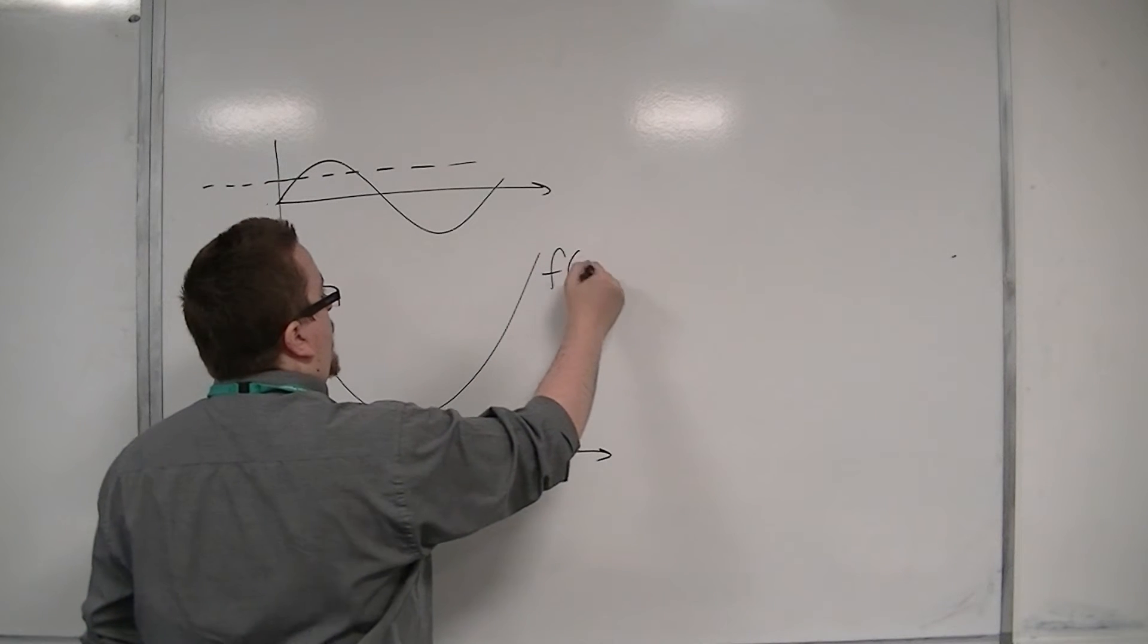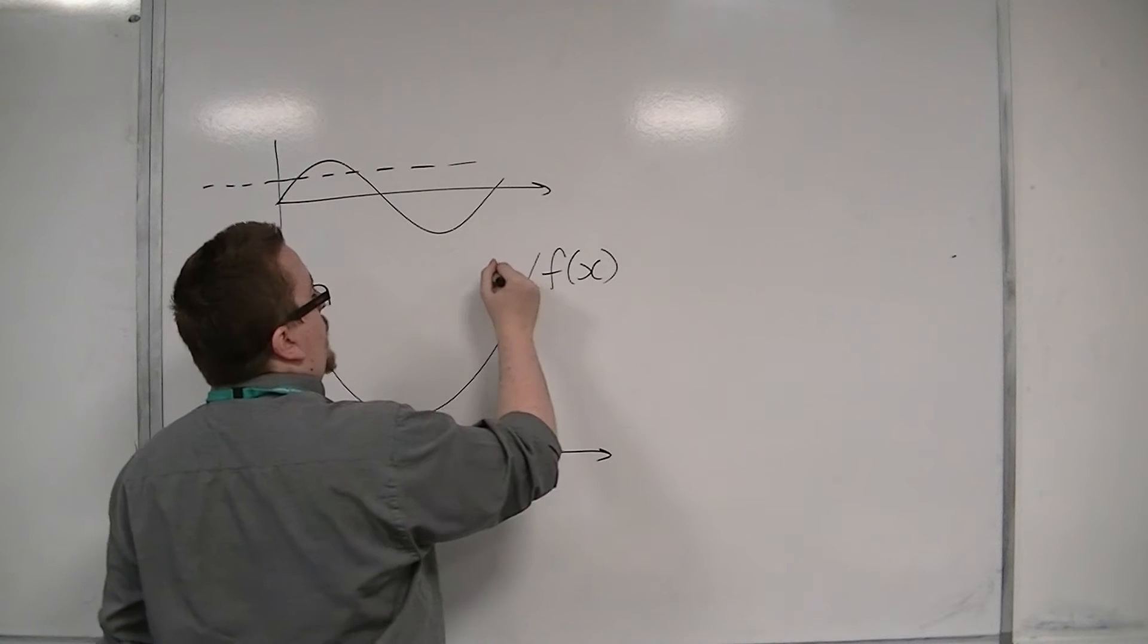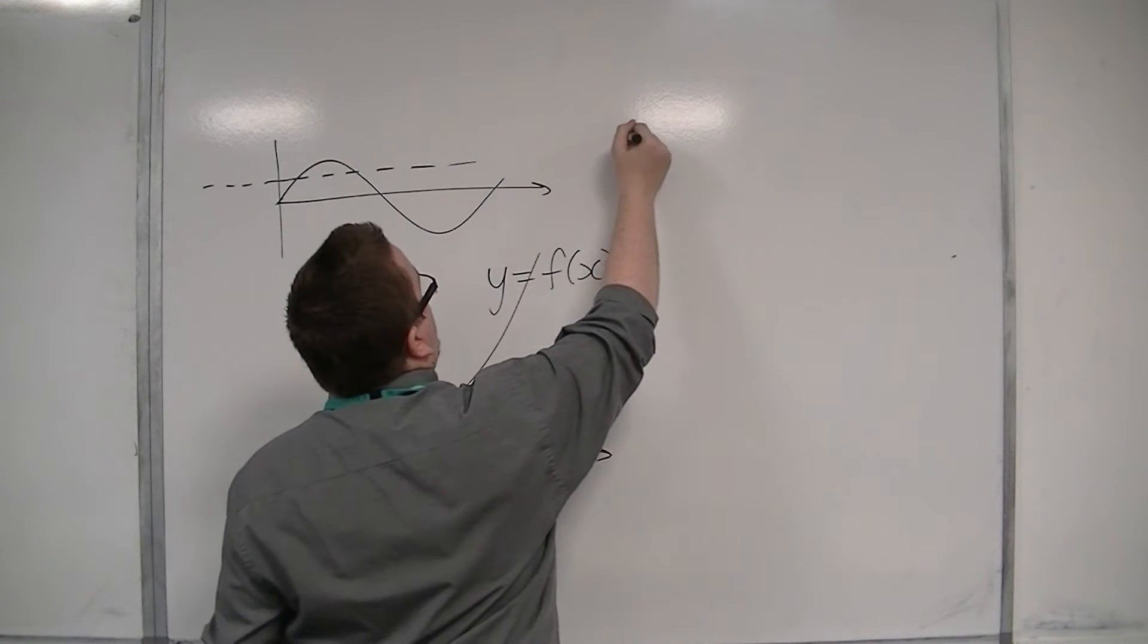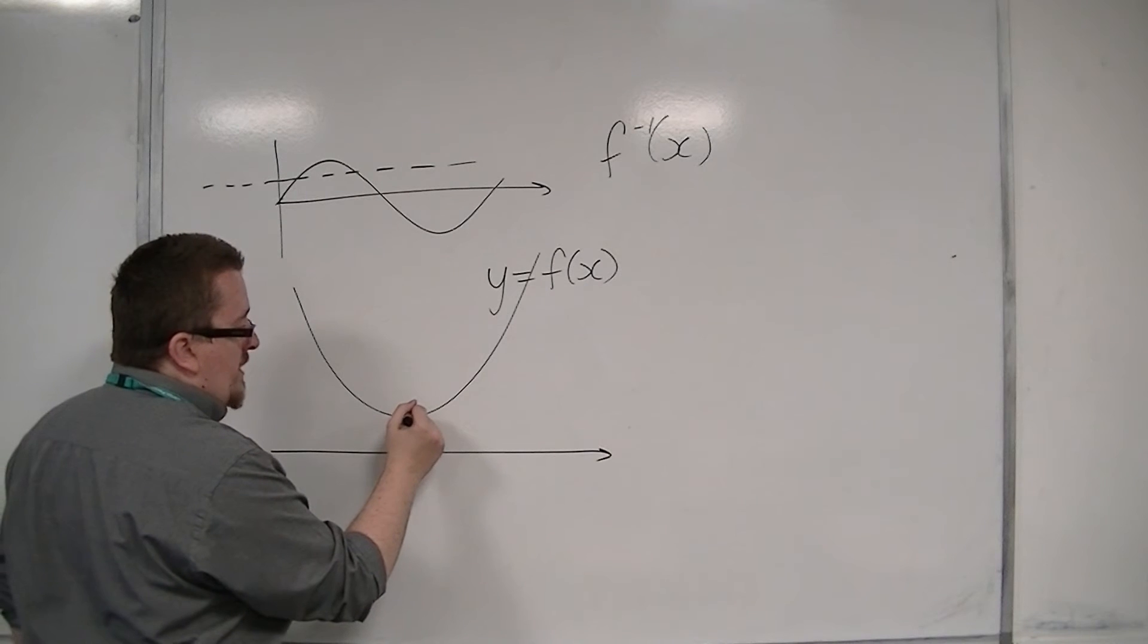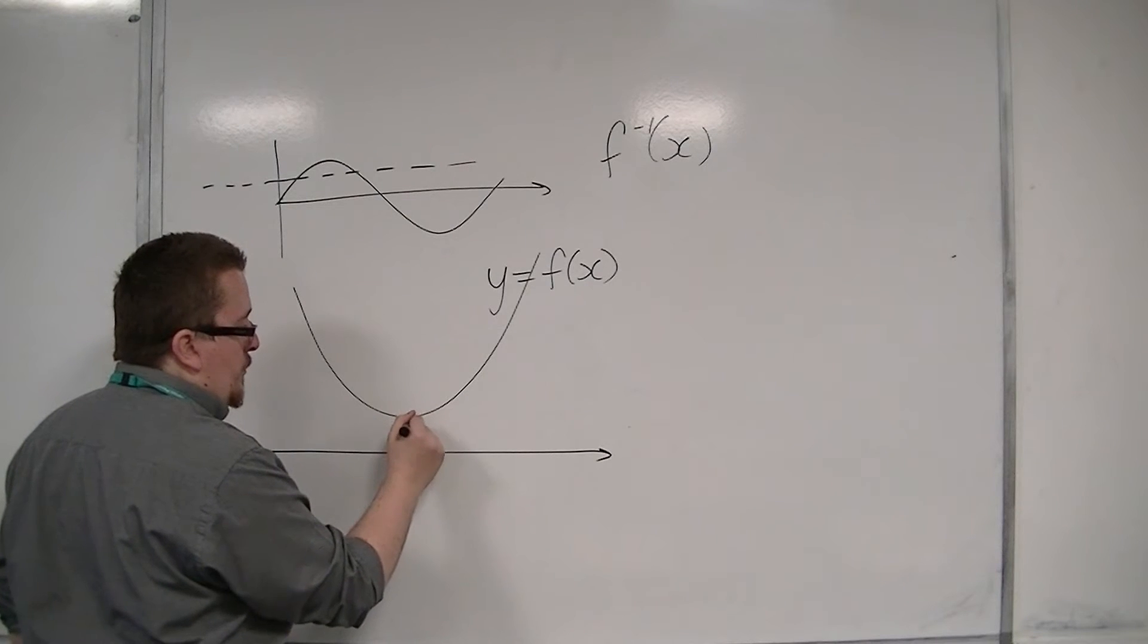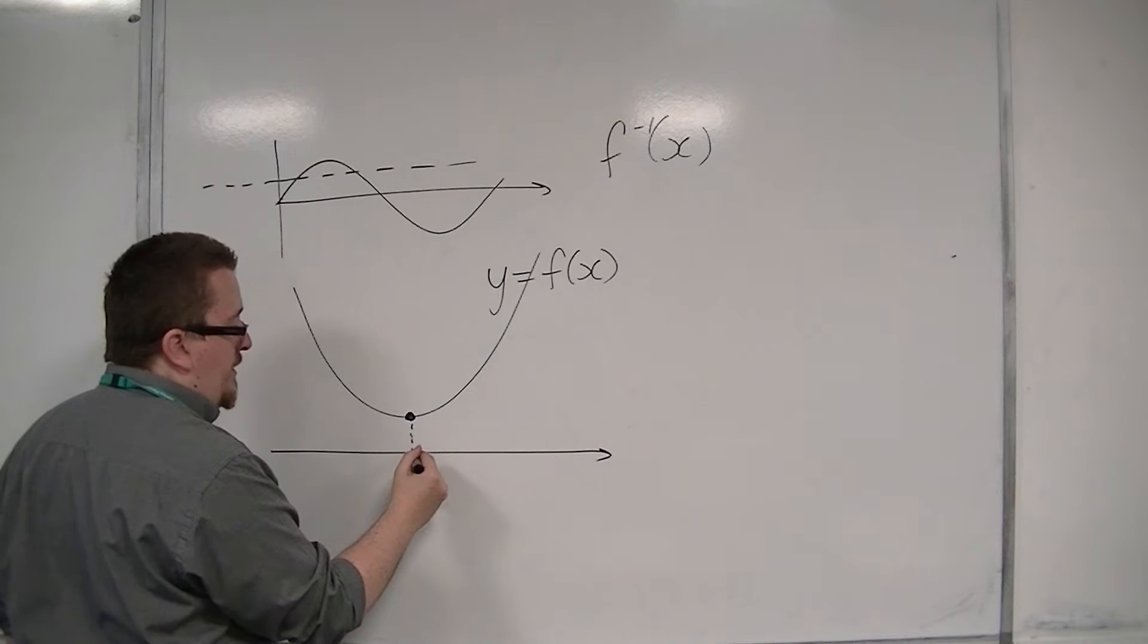so let's say this is f of x, and I want y is equal to f of x, and I want to find f minus 1 of x, I'm going to restrict the domain, so I'm going to choose that I'm just going from this point onwards.